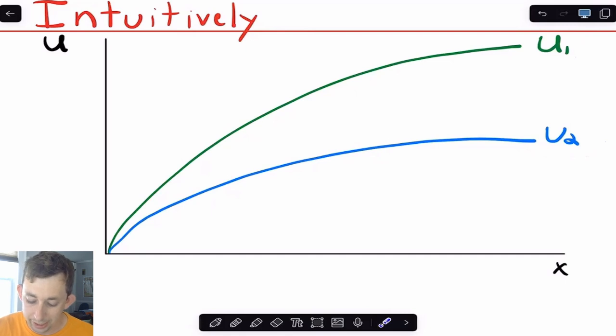And the way you can tell that is because the concavity of person two is much higher, it's much more intense than the concavity in person one's utility function. And so the Arrow-Pratt measure of risk aversion is just trying to have an objective way to measure the concavity of the utility function.